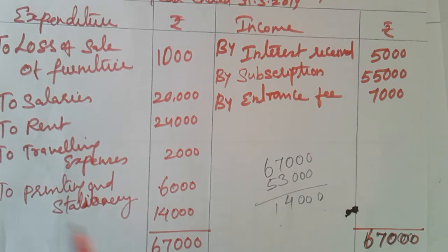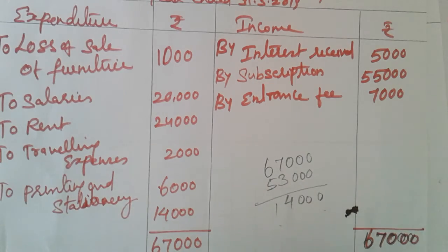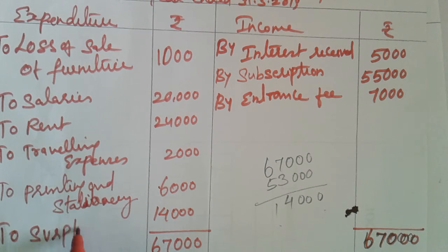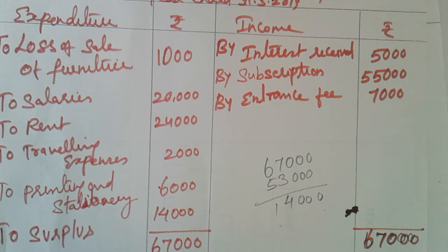This is the income side and the expenditure side. In the income side, the expenditure is less. Then what is the surplus? Surplus — that is, excess of income over expenditure.